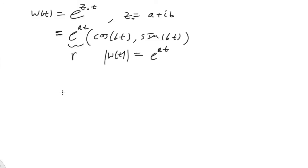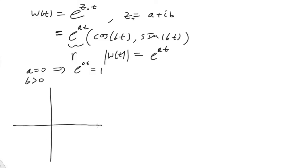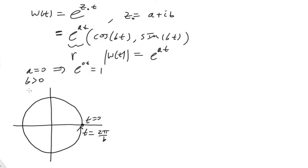That reflects the magnitude. Let's pick a few values. For a equal to zero, e^(0·t) equals 1, so the modulus is always one for every value of time. Taking b to be positive, we'd have a situation that looks just like before — it would trace out a unit circle starting at t equals 0 and ending at t equals 2π/b. Now if b were negative, you would simply go the opposite direction around the circle.